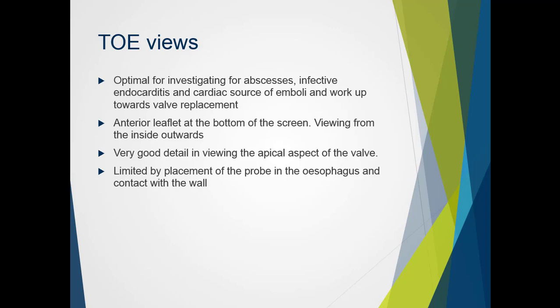Transesophageal echo is very good at detailing the atrial aspect of the valve. If there is significant calcification, the ventricular aspect of the valve may be difficult to visualise. Moving the probe into a transgastric position, the user can visualise the mitral valve from an LV long axis and short axis view. It is important to note that transesophageal imaging is limited by placement of the probe in the oesophagus and contact with its wall, which is different to transthoracic echo where the entire chest can be utilised, both front and back.